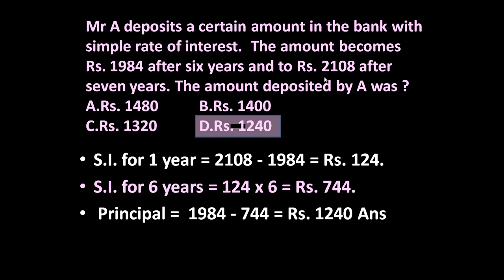So the amount deposited by A was Rs. 1984 minus Rs. 744, which is equal to Rs. 1240. Because with interest after 6 years he receives Rs. 1984, but in this Rs. 1984, Rs. 744 is the interest we have calculated. So this minus this is equal to Rs. 1240.